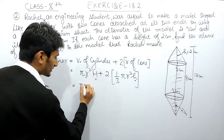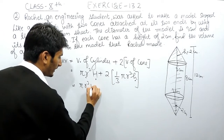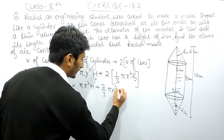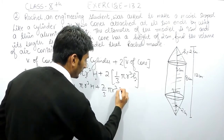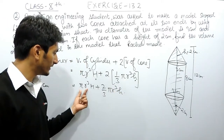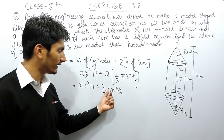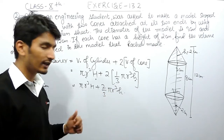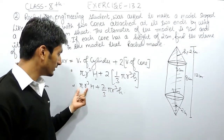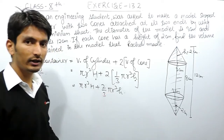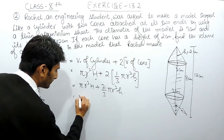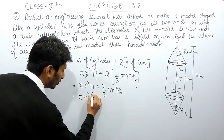So the total volume can be written as π r² h + 2 × (1/3) π r² h. Instead of solving this directly, we can take π r² as a common factor to make the calculation easier, so that π r² is computed only once.